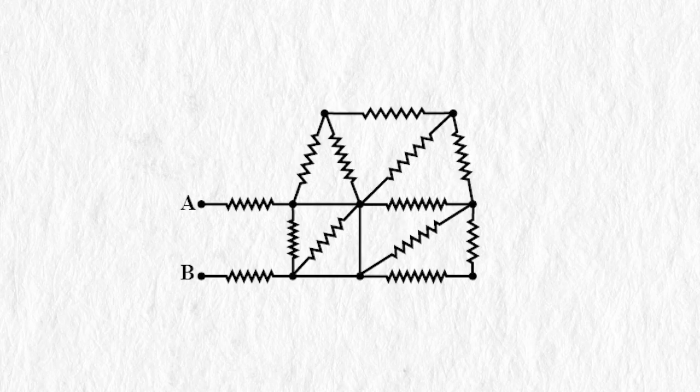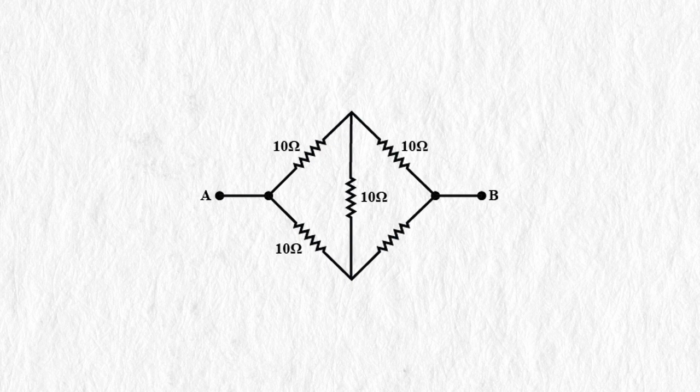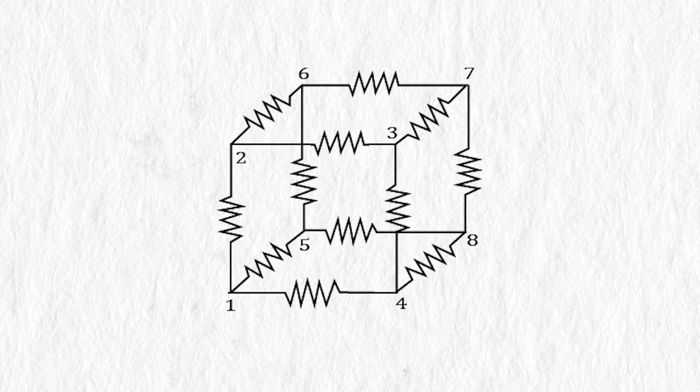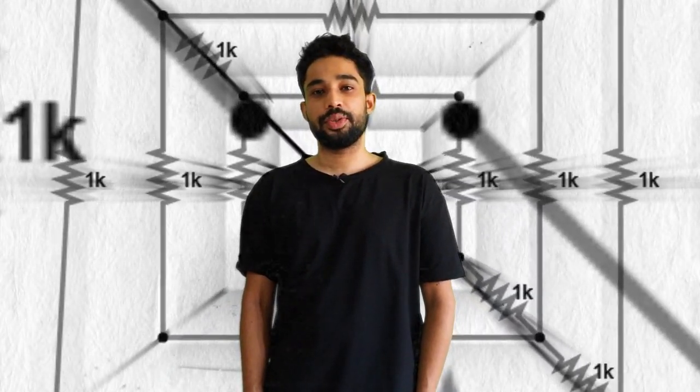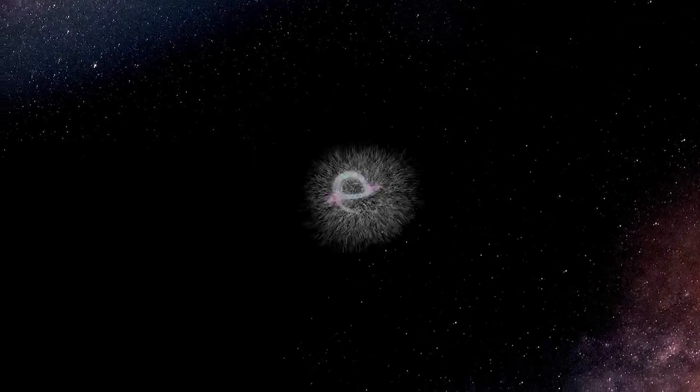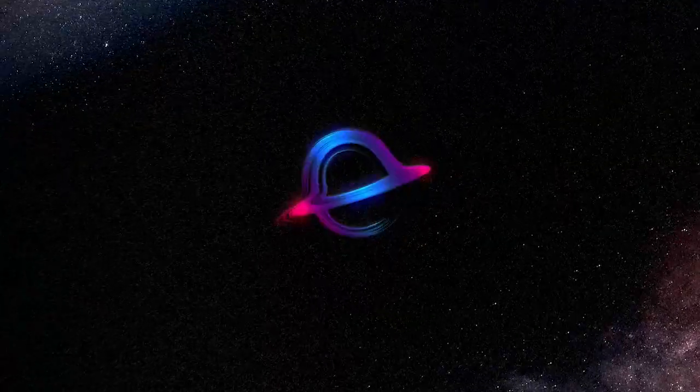There is something about these circuits - none of the resistors seems to be in series or parallel, which makes it hard to solve them directly. So how are we gonna do it? How can we find the equivalent resistance of the circuit, or the current in any branch, or the voltage at any node? That's exactly what we are going to do in this video. We are gonna be using the concept of equipotential points - that is, points which are at the same potential - to solve these circuits.